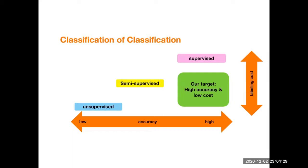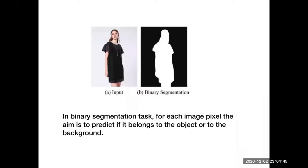Most recent works have designed training processes that include GANs to solve their tasks. One of them is foreground object segmentation — also called binary segmentation or saliency detection — where for each pixel, the aim is to predict whether it belongs to the object or the background.